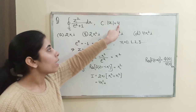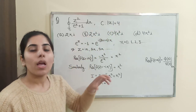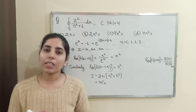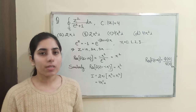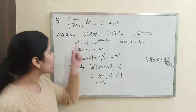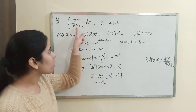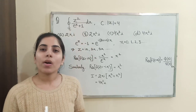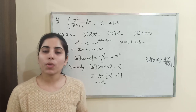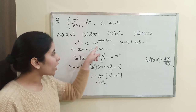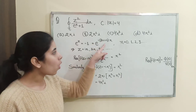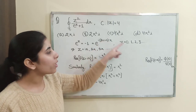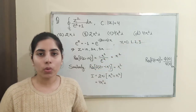Our first step is to find the poles. To find the poles we equate the denominator with zero: e^z + 1 = 0, which gives e^z = -1. We can write -1 in exponential form as e^(iπ(2n+1)), representing odd multiples of π. When we put n = 0, 1, 2, 3, and so on, we get odd values.